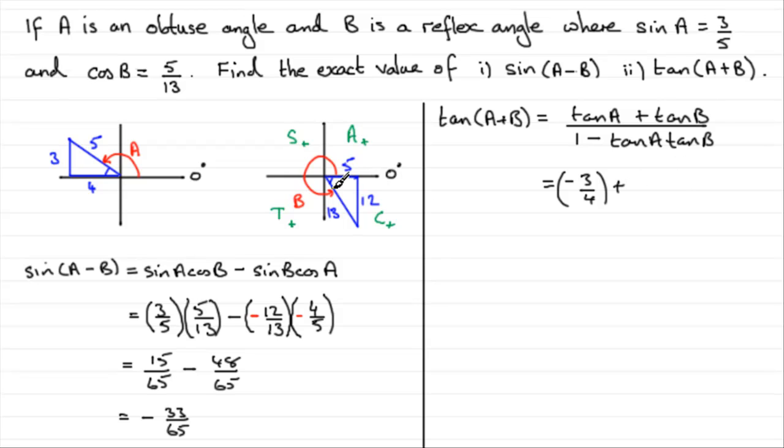Tan of B. Use this triangle. Opposite over adjacent. Twelve over five. But, tan is negative in this quadrant. So, it's going to be minus twelve fifths. Now, we have those values. We can fill them in on the bottom here. We've got the one minus tan A. Minus three quarters then. Multiply by tan of B. Which is minus twelve fifths.